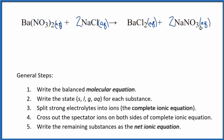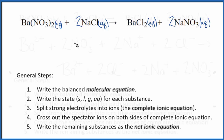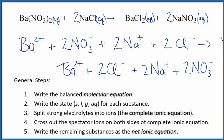When we talk about net ionic equations, we split up all of these ions to write what we call a complete ionic equation. So let me do that real quick. Here's the complete ionic equation. And then in a net ionic equation, we'd cross out spectator ions — they're ions that are the same on both sides.